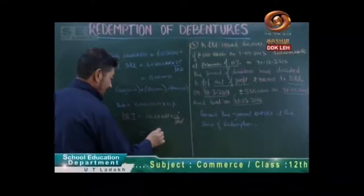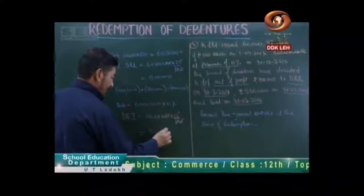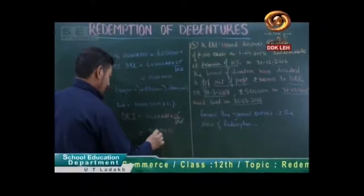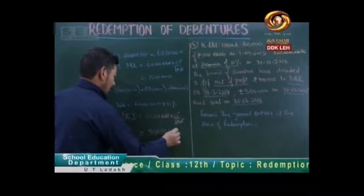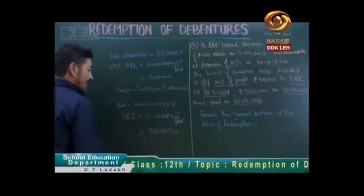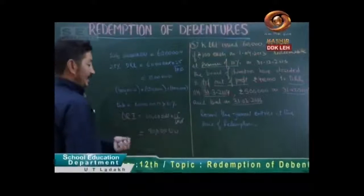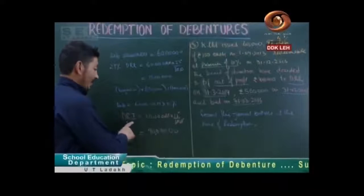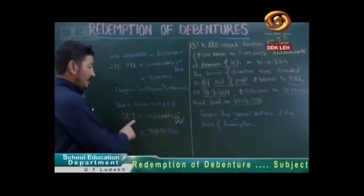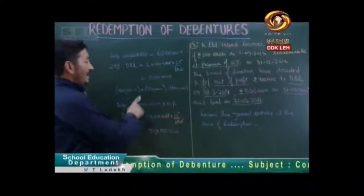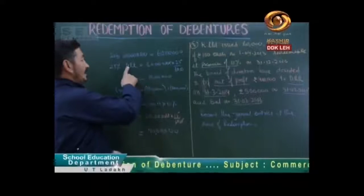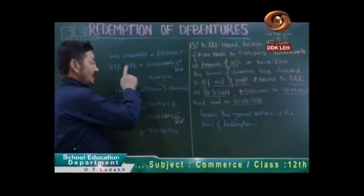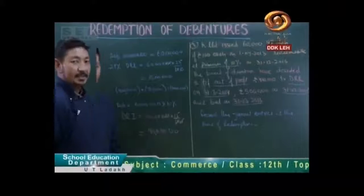So this is our budget: 9 lakhs. We have DRI — Debenture Redemption Investment — 15 lakhs and Debenture Redemption Reserve account.